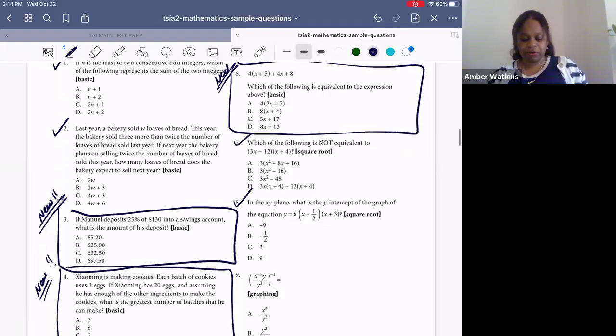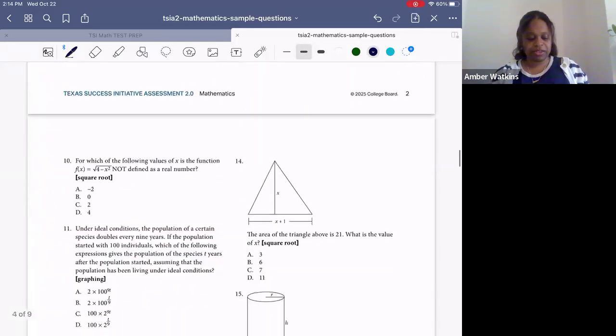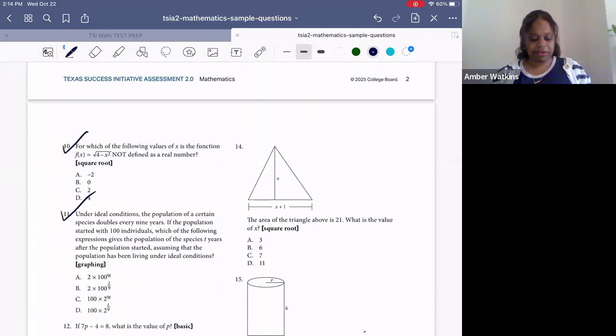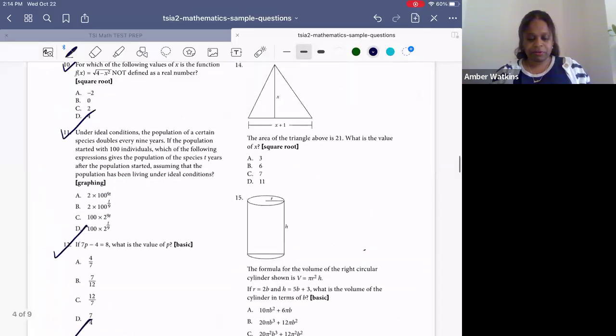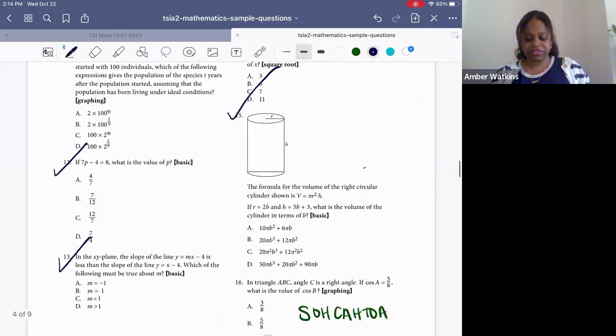Seven we've seen already. Eight, already. Nine, already. Ten's the same. Eleven, we've seen already. Twelve, we've seen. Thirteen, we've seen. Fourteen, we've seen. Fifteen, we've seen.